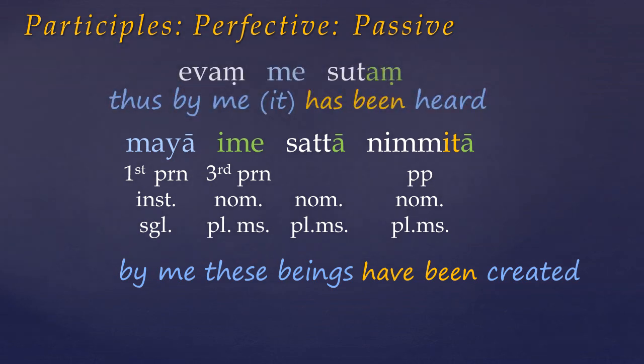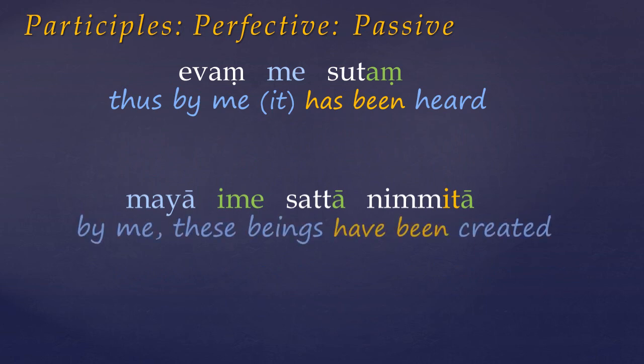We can take a few things away from this. First, the subject — that is the grammatical subject — will always be marked by the nominative case, regardless of voice. A telltale feature of the passive voice is that if the agent is expressed, it will be in the instrumental case. If there's no agent in the instrumental, it's a good idea to check if the verb is intransitive, in which case the sentence will be active. But if the subject is undergoing the action and the past participle is from a transitive verb, or there's an agent in the instrumental case, then it's likely to be in the passive voice.